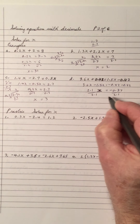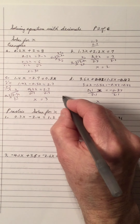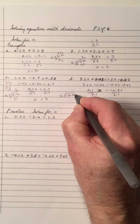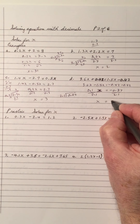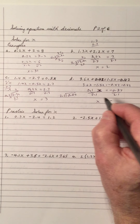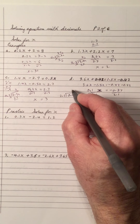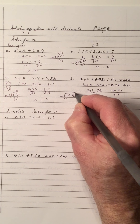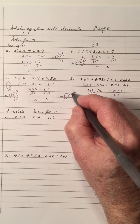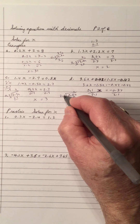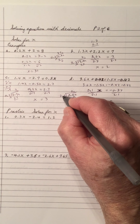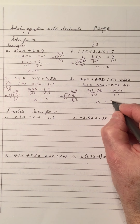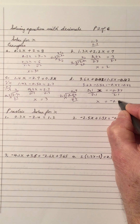Divide by 2.1 on both sides — that cancels out. X equals 2.1 divided into 0.84. Now we know the answer is going to be negative — negative divided by positive is negative. But we don't have to put the negative in here yet. Move the decimals one place to the right in both. 21 into 8 can't go; 21 into 84 is 4. So we get negative 0.4.